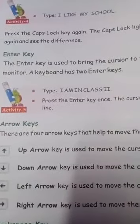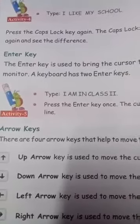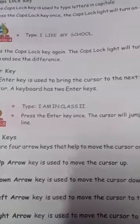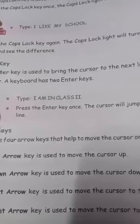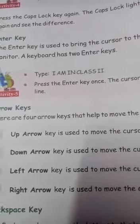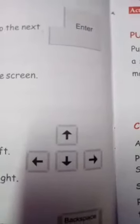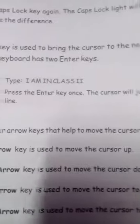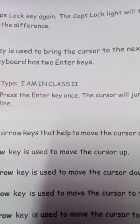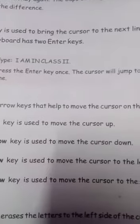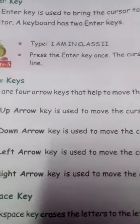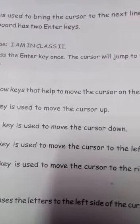Next is arrow keys. Can you tell me, children, how many arrow keys are there? Yes, there are four arrow keys that help to move the cursor on the screen. They are the up arrow key, down arrow key, left arrow key, and right arrow key. Up arrow key is used to move the cursor up. Down arrow key is used to move the cursor down. Left arrow key is used to move the cursor to the left. And right arrow key is used to move the cursor to the right.